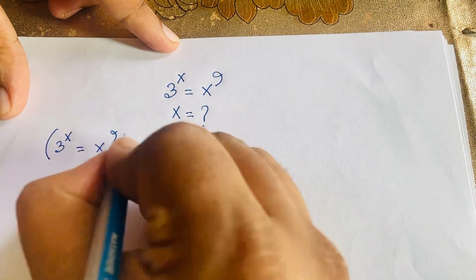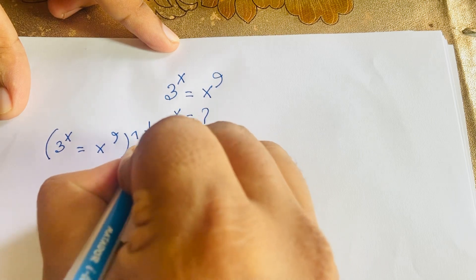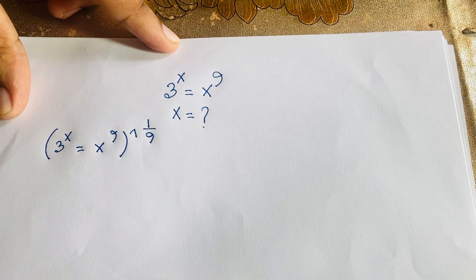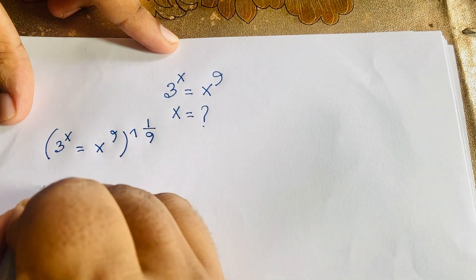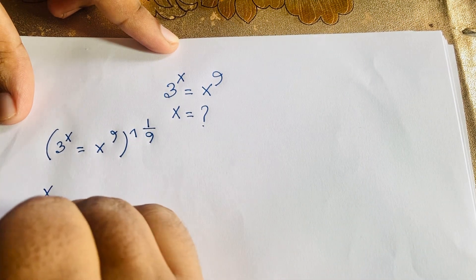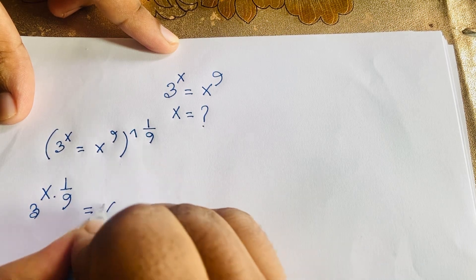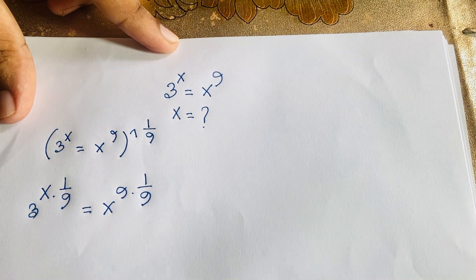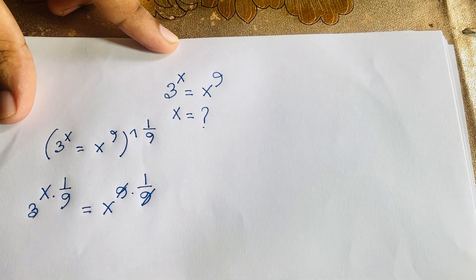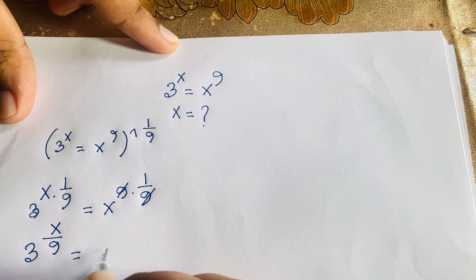I raise both sides to the power of 1 over 9. So 3 to the power x times 1 over 9 is equal to x to the power 9 times 1 over 9. The 9 and 9 cancel, and we find that 3 to the power x over 9 is equal to x.